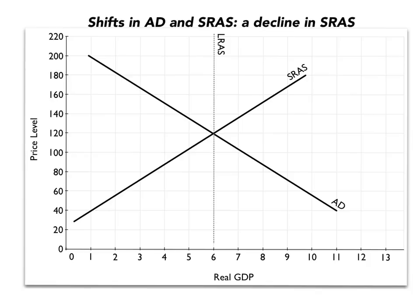So what might cause a shift in the short-run aggregate supply curve? We've got some historical evidence from the 1970s that if oil prices increase rapidly, the short-run aggregate supply curve decreases. Let's start from an initial equilibrium that is at long-run and short-run equilibrium — where AD and SRAS intersect also happens to be at the potential output where the long-run aggregate supply curve is.